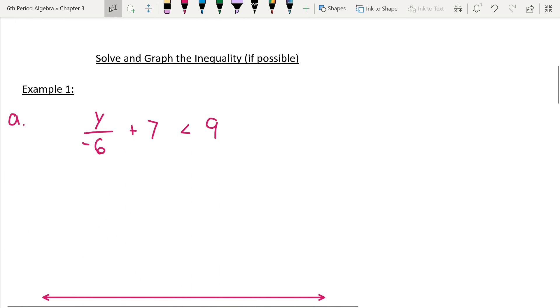Here's example one. I've got to be on this problem. It is y over negative 6 plus 7 is less than 9. I'm just going to, for right now, draw a little bit of a fairness bar from our inequality symbol. Just like I would with solving equations, the first thing I would do is get rid of the constant. The constant is plus 7, so I would undo it with minus 7 on both sides.